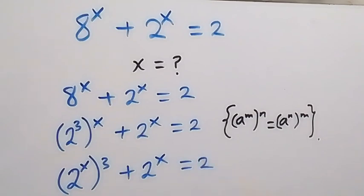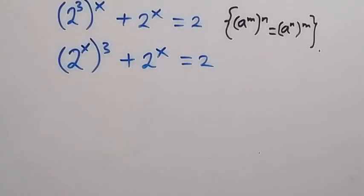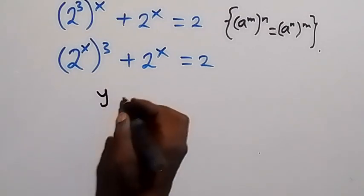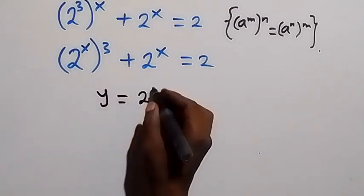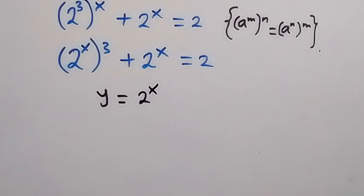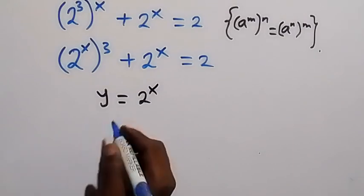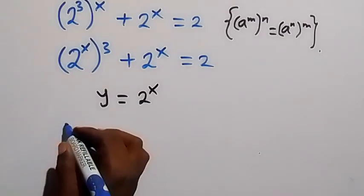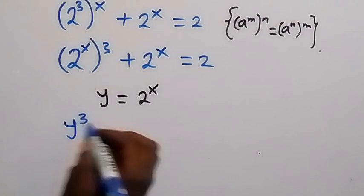From here, 2 to the power of x is common. We can use a substitution — let y equal 2 to the power of x. In the next step, we replace 2 to the power of x with y, so this becomes y to the power of 3.